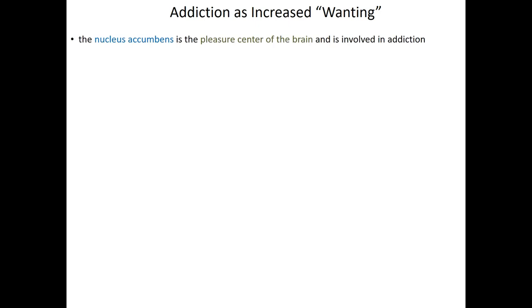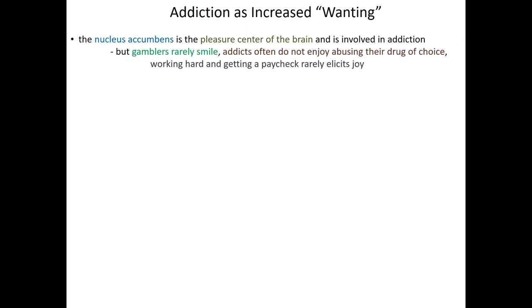Switching gears to talk about alcoholism, we first have to discuss what addiction is neurobiologically. The region of the brain responsible for pleasure is the nucleus accumbens — the pleasure center of the brain — and it seems to play a role in addiction. But that's counterintuitive, because when you think of addicts, you don't think of pleasure. Gamblers are rarely smiling as they gamble, and addicts don't often enjoy abusing the drug of their choice. So we have to question that antiquated notion of the nucleus accumbens as the pleasure center. It makes more sense to think of it as the want center of the brain.